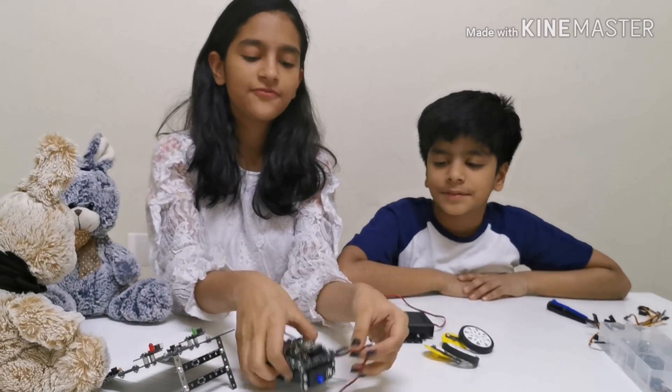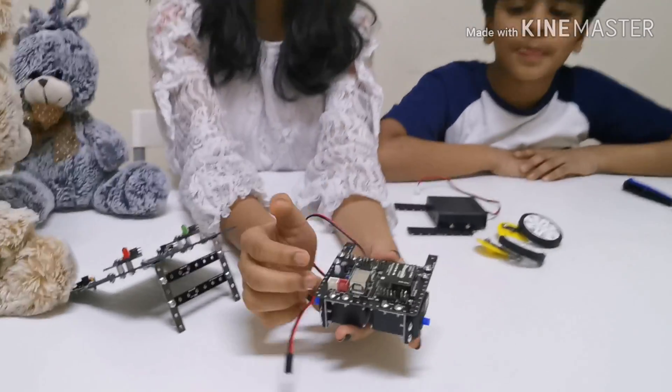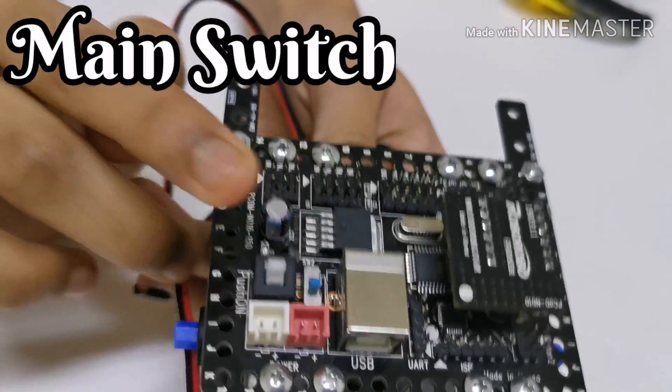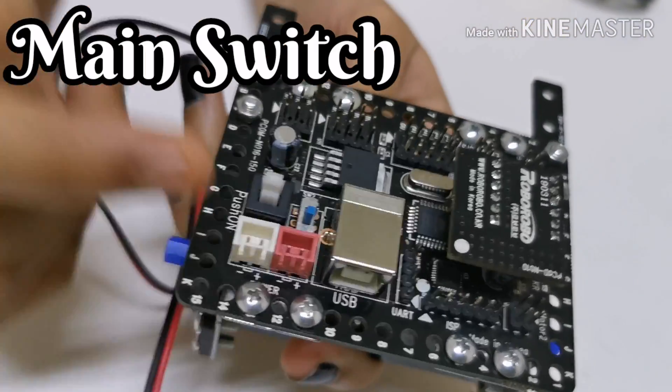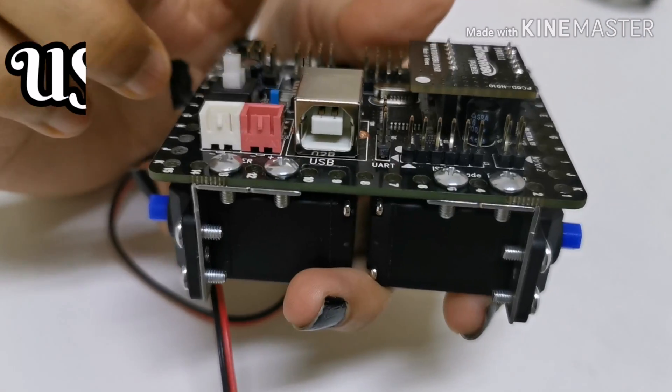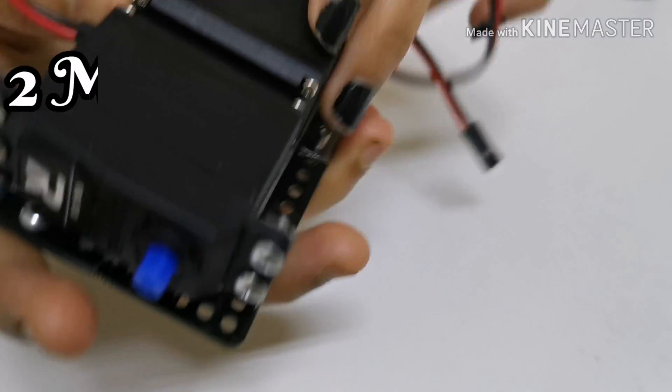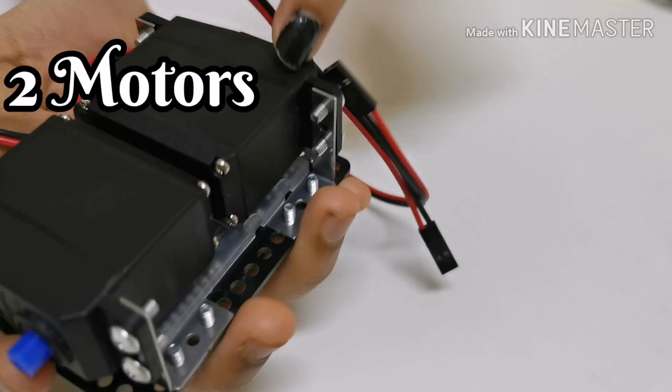So over here, we have finished a few parts like this. This is the CPU board. Over here, this is the main switch, which we use to turn on the robot. And here is the USB port, which we use to connect the computer to it. And under it, we have fixed two motors.